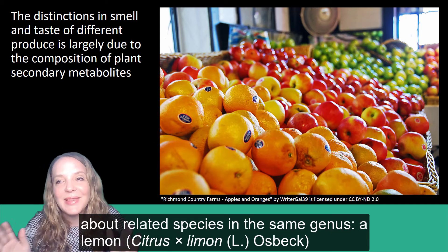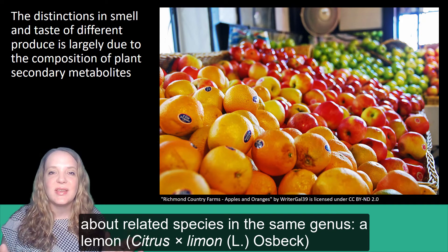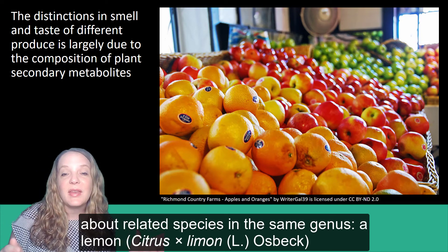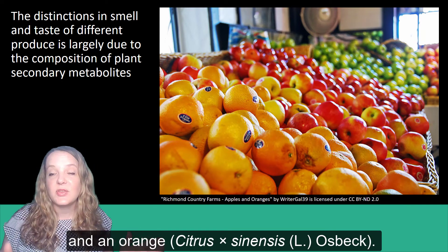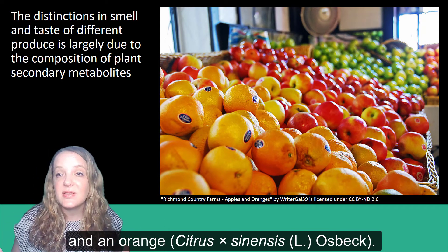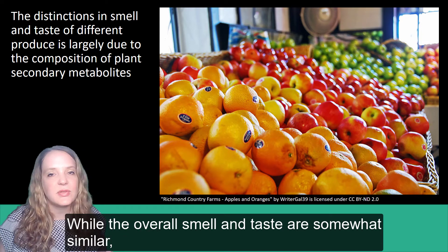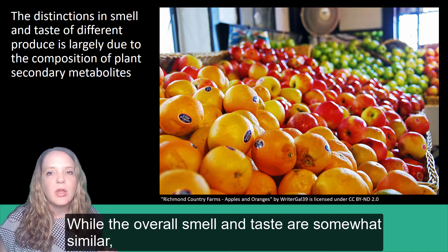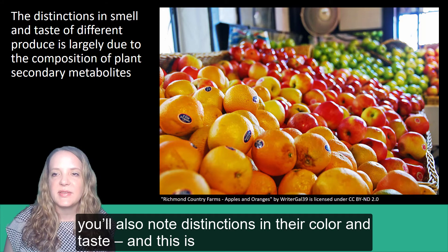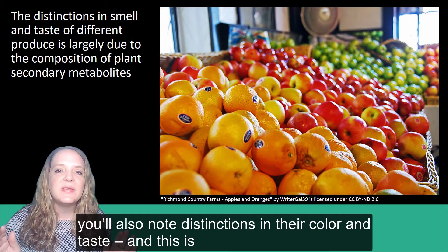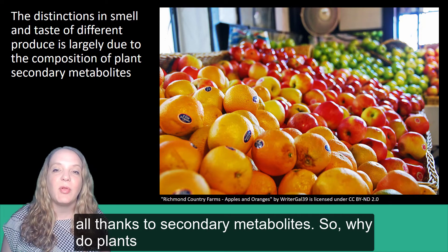Now think about a related species in the same genus, like a lemon, or Citrus limon, and an orange, Citrus sinensis. While the overall smell and taste are somewhat similar, you'll also note distinctions in their color and taste. And this is all thanks to secondary metabolites.